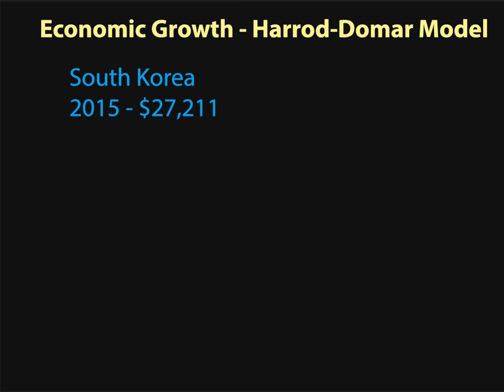On the other hand, if you look at some other countries, for example Ghana, GDP per capita is a lot lower — just about 1,400 US dollars. I've been to Ghana and it's a great place, but you can kind of see that Ghana is a bit poorer in terms of infrastructure, healthcare, etc., than places like South Korea.